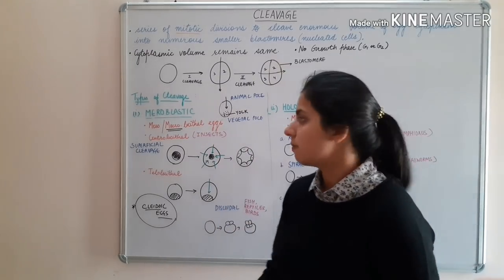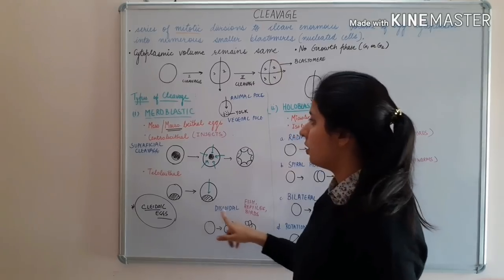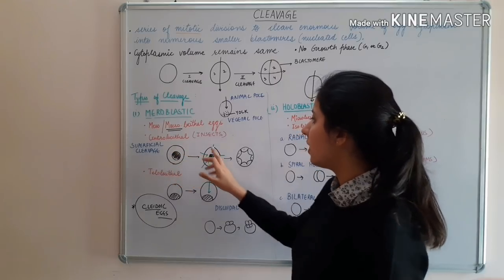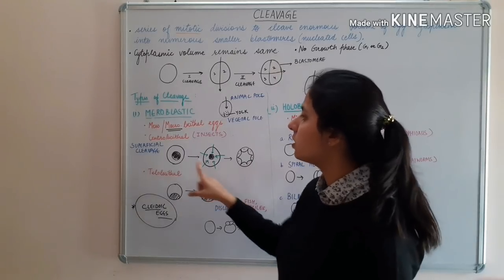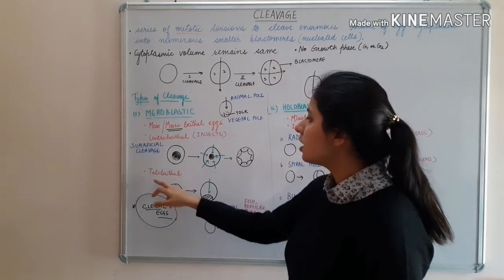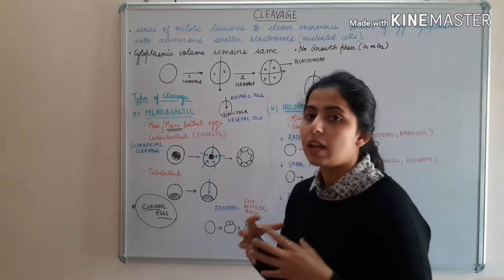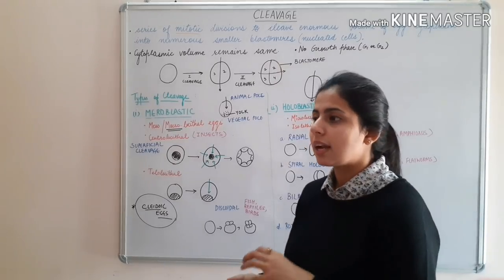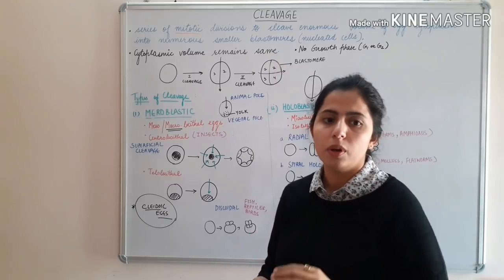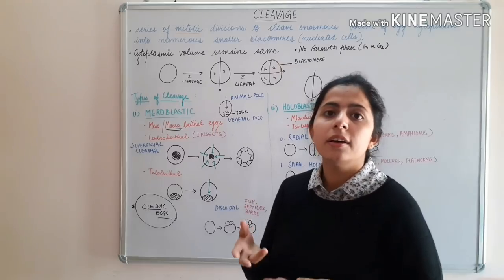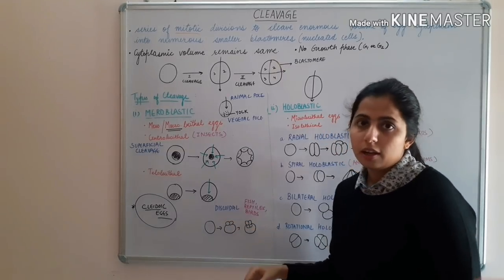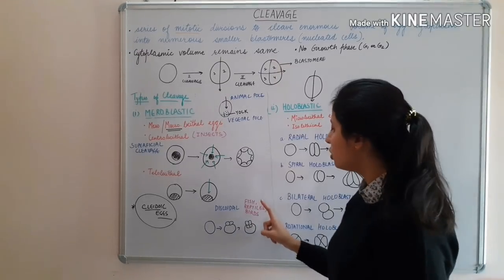Meroblastic cleavage can be further classified as superficial cleavage and discoidal cleavage. In centrolecithal eggs, because the yolk content is present at the centre, cleavage occurs at the periphery of the egg — this is superficial cleavage, mainly found in insects like Drosophila. In telolecithal eggs, cleavage is discoidal because the large amount of yolk is at the vegetal side, while the cytoplasmic content is at the animal pole in a narrow disc-like region. Discoidal cleavage is mainly found in fish, reptiles, and birds.